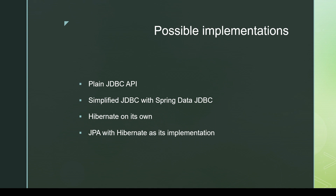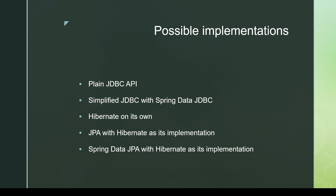The next option is to use JPA with Hibernate as its implementation, which means instead of using Hibernate-specific classes, interfaces, and annotations, we use JPA-specific annotations and classes, with the implementation provided by Hibernate. We add the corresponding dependencies, but the important thing is the overall annotations and abstractions belong to JPA. The last option is Spring Data JPA with Hibernate as its implementation. These are the possible approaches we can follow in an application.